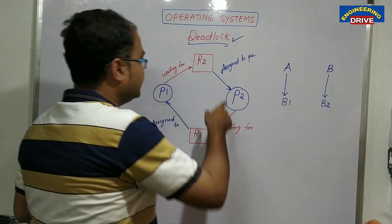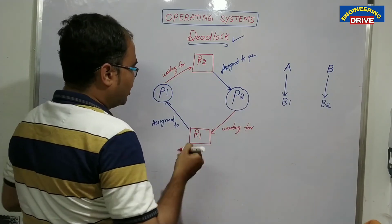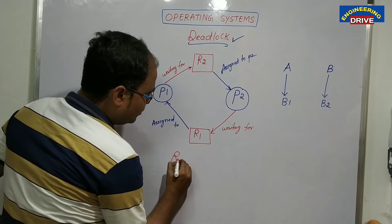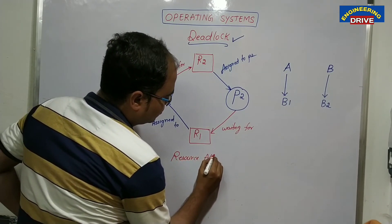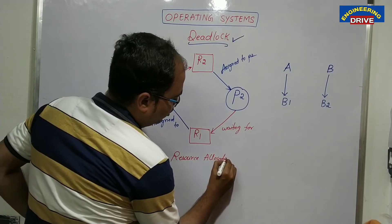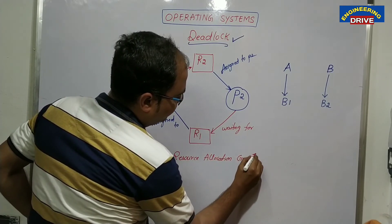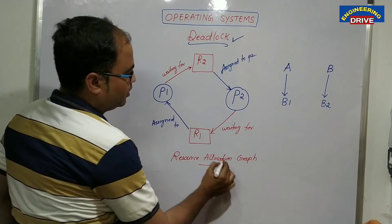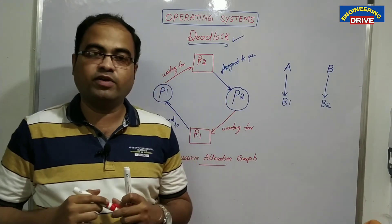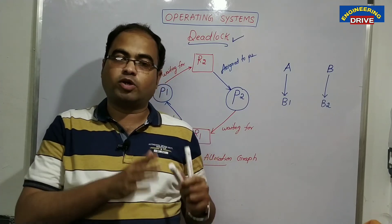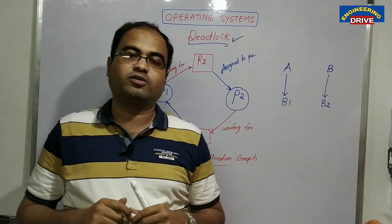The concept of deadlock is explained with the help of this graph. We call this graph the resource allocation graph, in which we make use of processes and resources to explain the concept of deadlock.